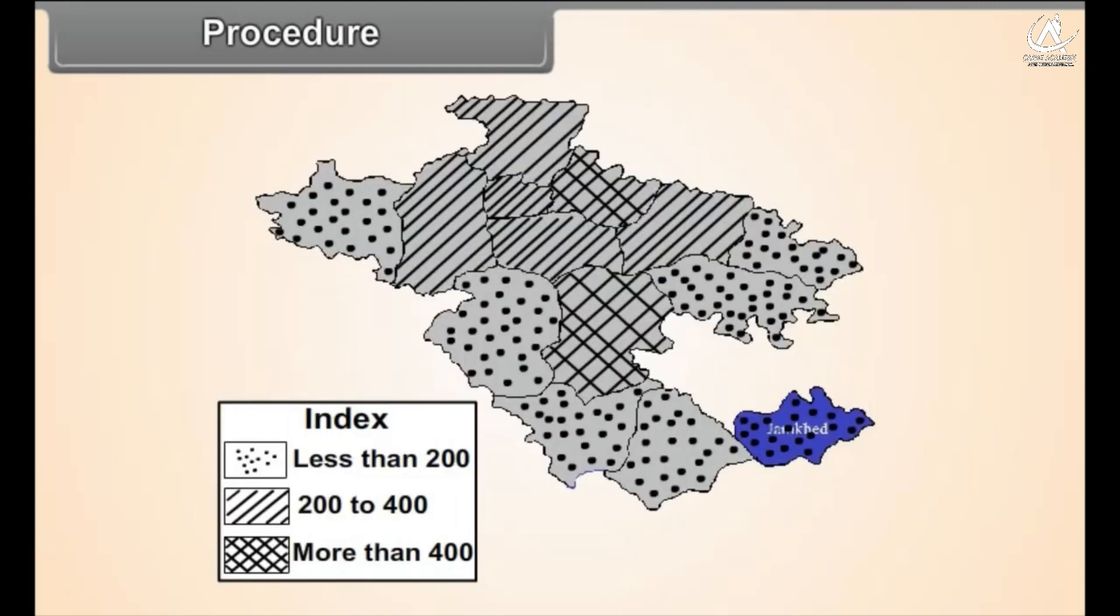Prepare an index and show the same in the map. This is how a choropleth map is prepared.